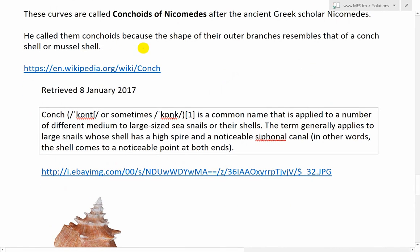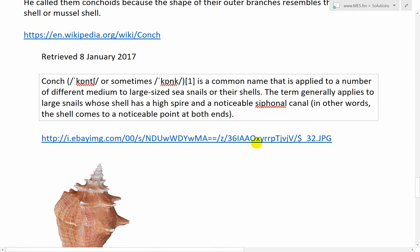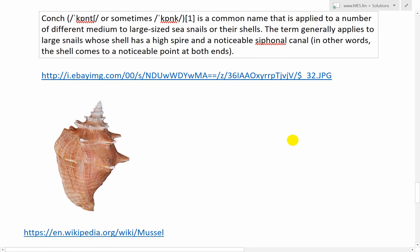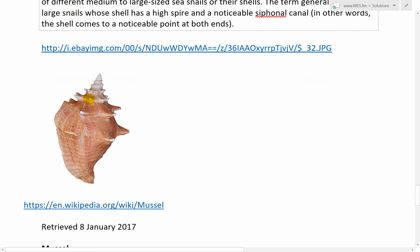And basically these were named after the ancient Greek scholar Nicomedes. And here I'll just type that out, brief history lesson. And so that's what they're called or known as Conchoids of Nicomedes. He called them Conchoids because the shape of their outer branches resembles that of a conch shell or mussel shell. And you can go to Wikipedia to see a conch.